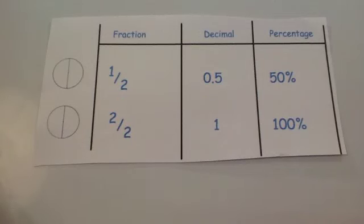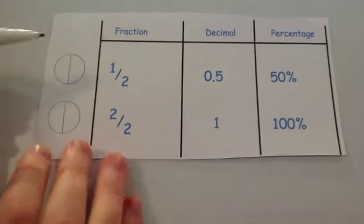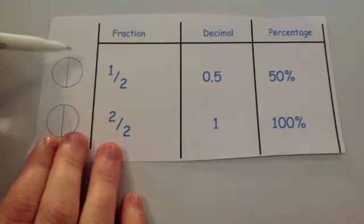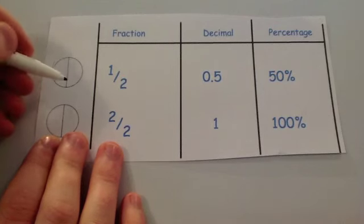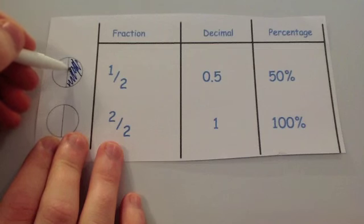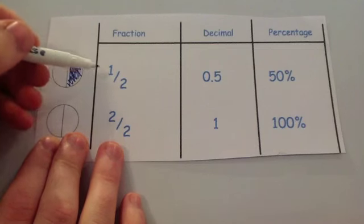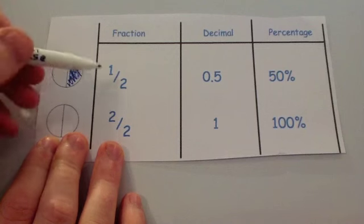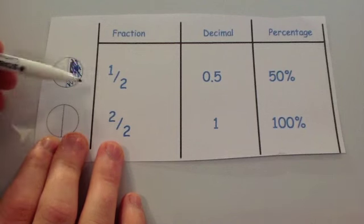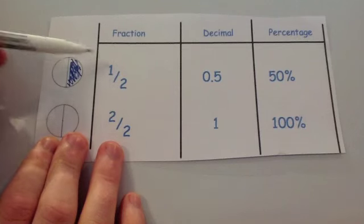In this video we're going to look at equivalent fractions, decimals and percentages — the key ones you should know off by heart. Let's start with a half. If you've got a pizza or cake, you should know that a half would be half of it — one out of the two sections colored in. That's why it's called a half.